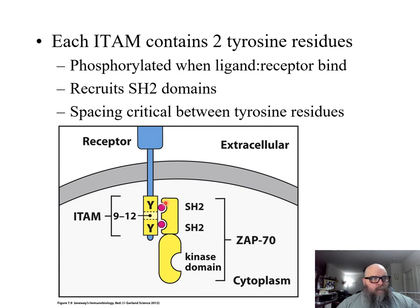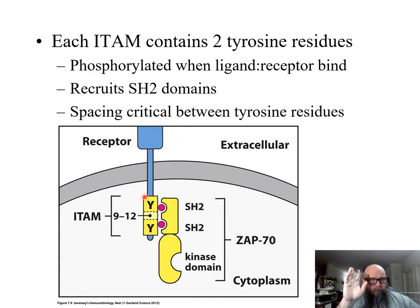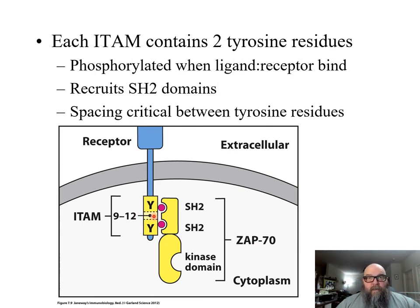Each ITAM has two tyrosine residues — that's what the Y represents. Remember, when it comes to amino acids, you can use the full name, the three-letter designation, or the one-letter designation. The one-letter designation for tyrosine is a capital Y. So these two Y residues can become phosphorylated — this is the ITAM. This is one of the accessory receptors, such as CD3. When everything becomes stable because the T cell receptor is bound to MHC with an epitope, the CD3 interaction becomes stable and tight, and that allows the ITAMs to become phosphorylated.